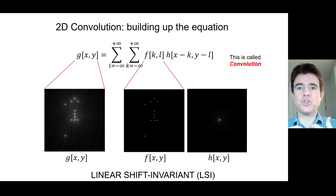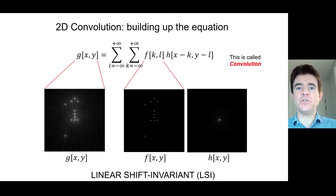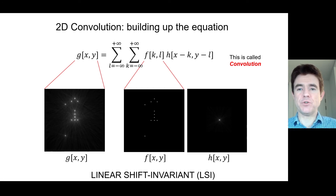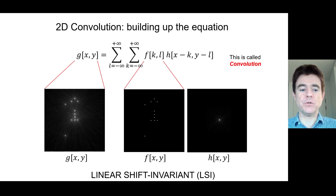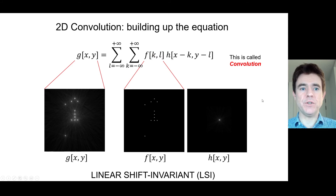All we're ever doing is changing the shift position and amplitude of the point spread function. The shape doesn't change — we just scale it up and down according to the value of F, and shift it to every single possible X and Y position in the field of view, indexed by K and L.